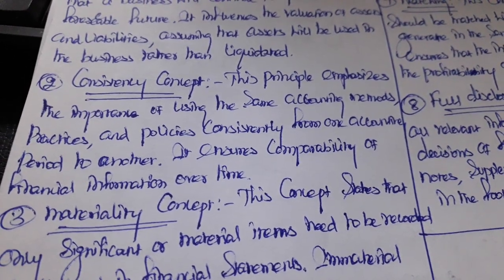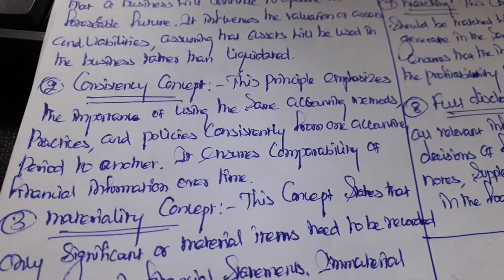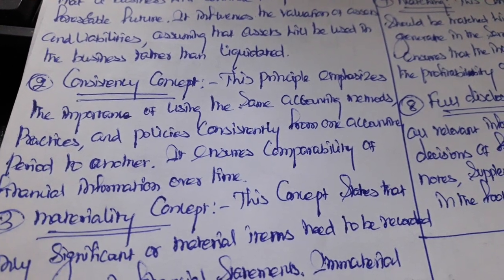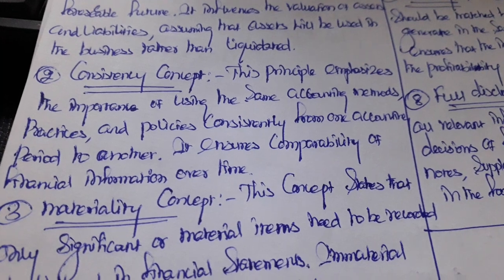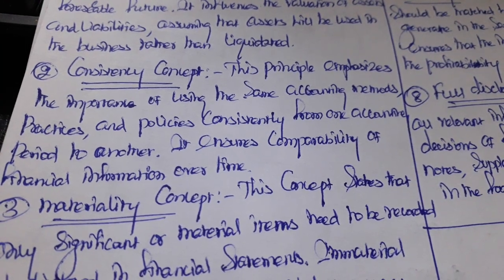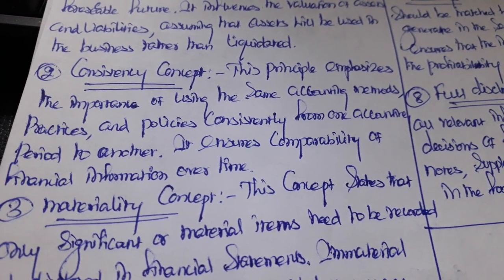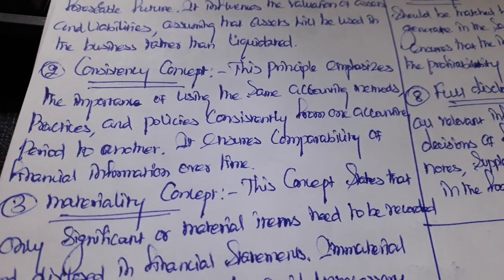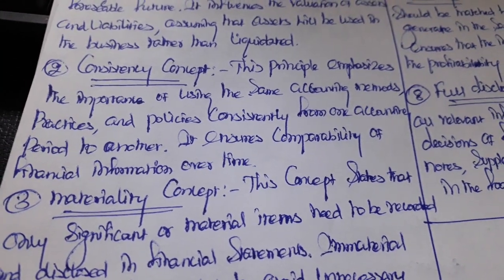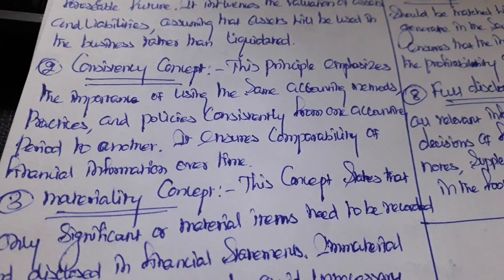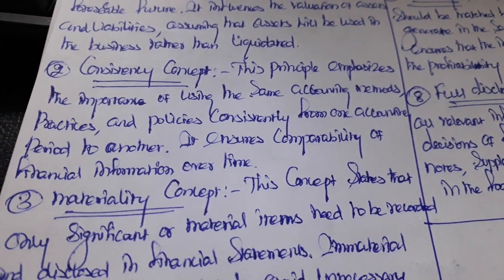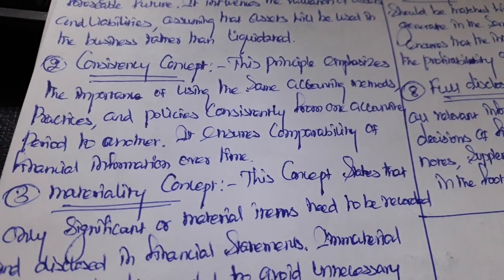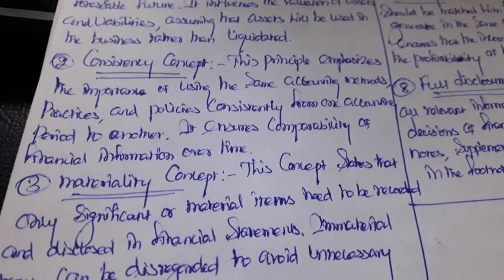Consistency means we need to consistently record our transactions using the same accounting methods and practices. We should not change policies and methods while recording our transactions. It ensures the comparability of financial information — comparability meaning the uniformity of transactions across periods.